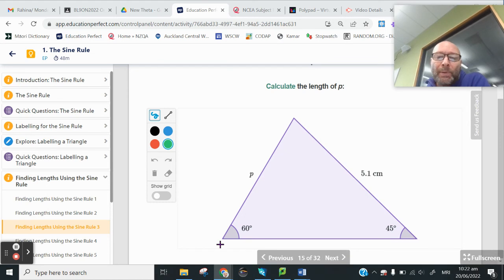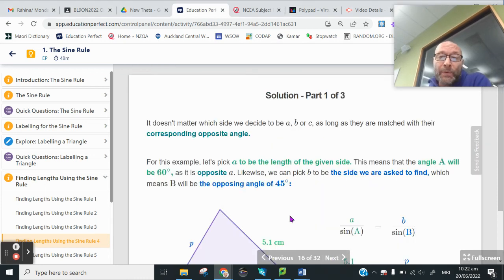We know that side P over the sine of 45 will be 5.1 over the sine of 60. If you haven't already done so, go ahead and write that one down, add it to your notes.